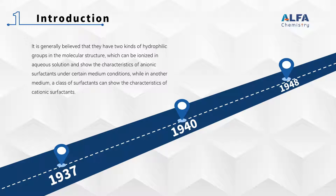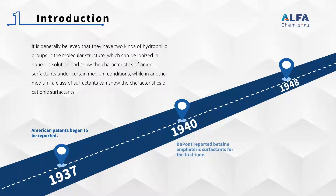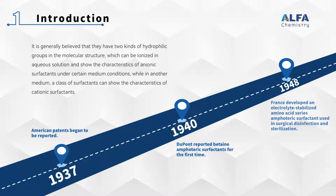Amphoteric surfactants are a late-developing class of surfactants. American patents began to be reported in 1937. In 1940, DuPont reported beta-en amphoteric surfactants for the first time. In 1948, France developed an electrolyte-stabilized amino acid series amphoteric surfactant used in surgical disinfection and sterilization.